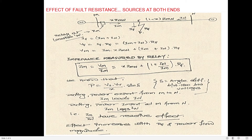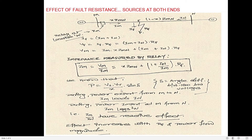In an AC system, power flow between bus M and bus N is possible only when there is an angle difference between the bus voltages. Power is transported from M to N if VM leads VN, and imported from N to M if VM lags VN. This is given by the equation P = Vs·Vr / X × sin(δ), where δ is the angle difference between the two bus voltages.